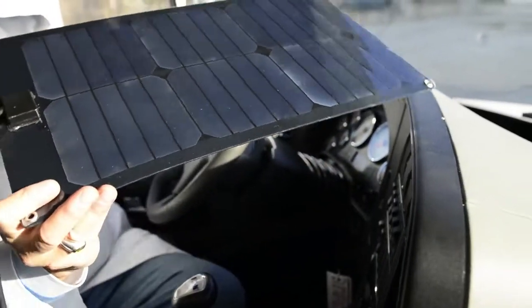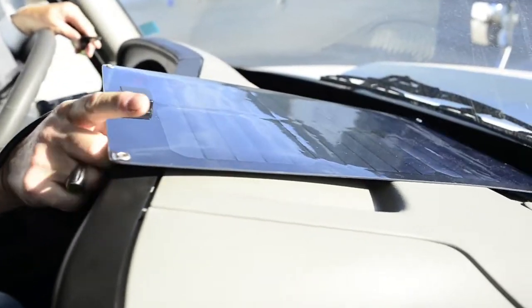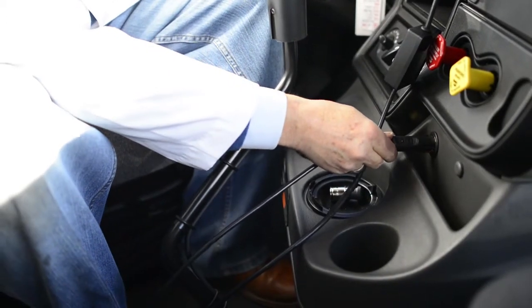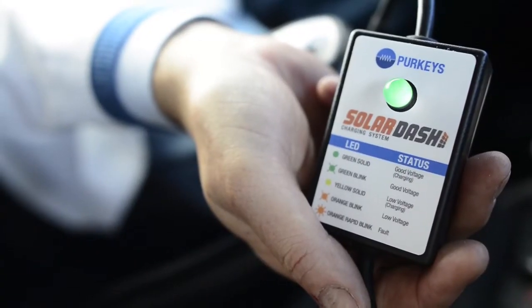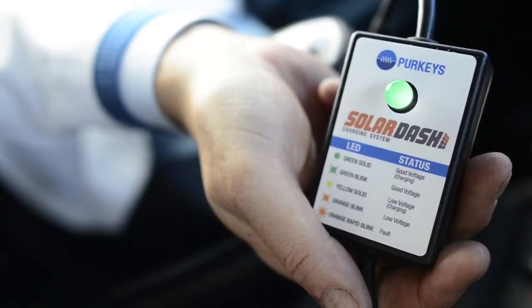Take the solar panel and you simply lay it on the dash. You plug the converter cord into the power plug, and now the brains of the outfit takes that voltage, which can be up to 17 or 18 volts,